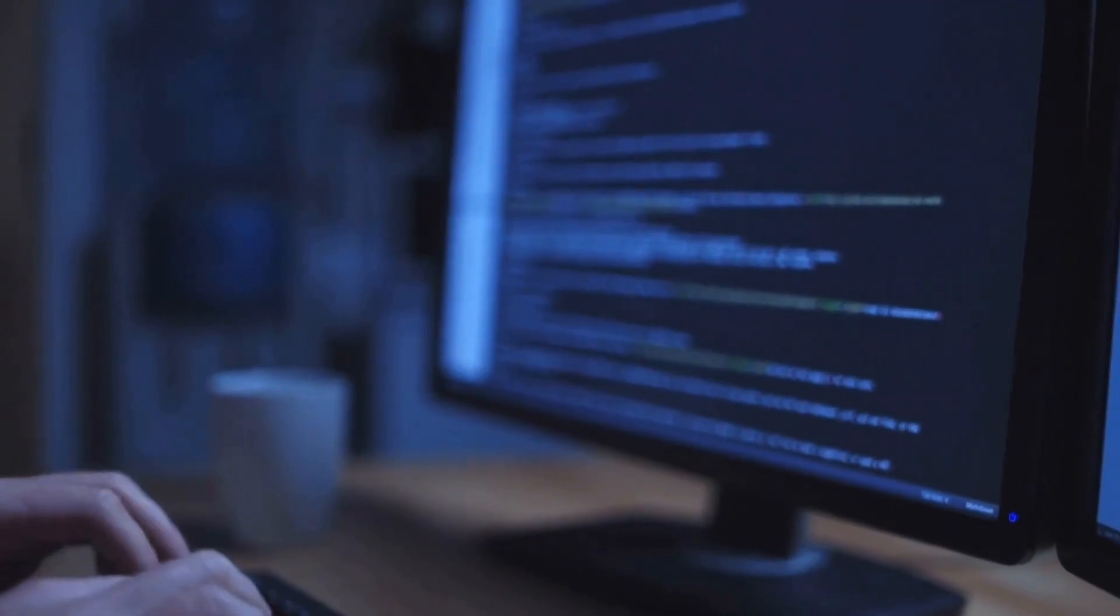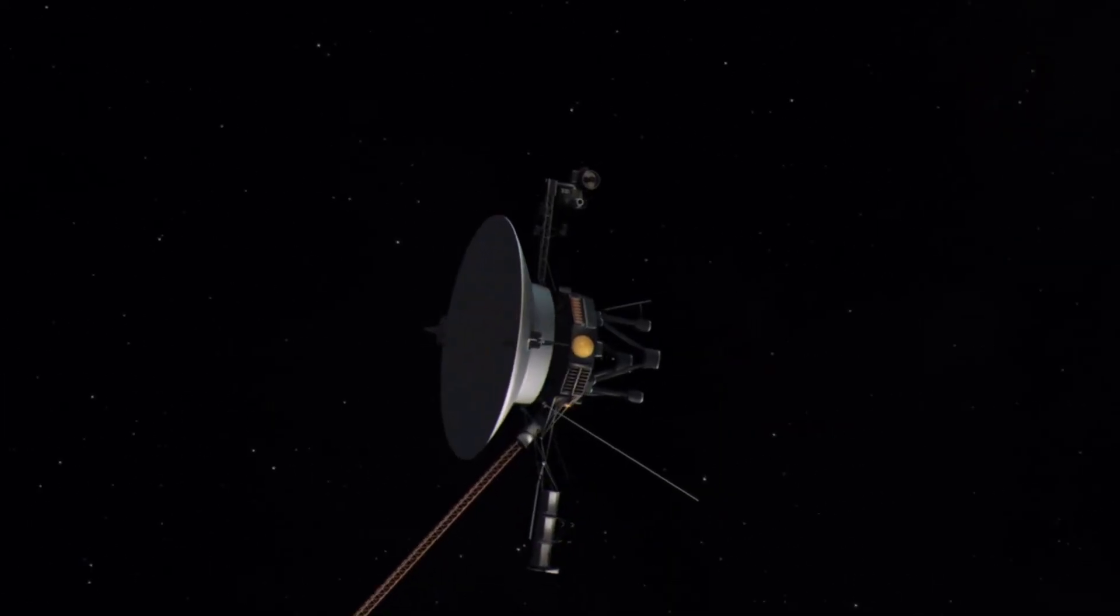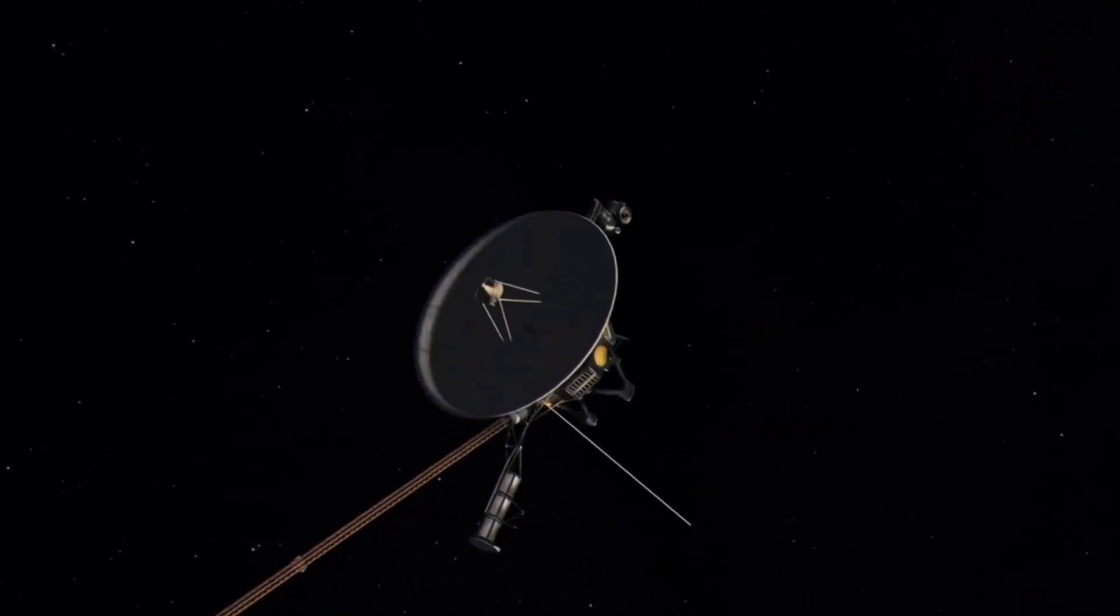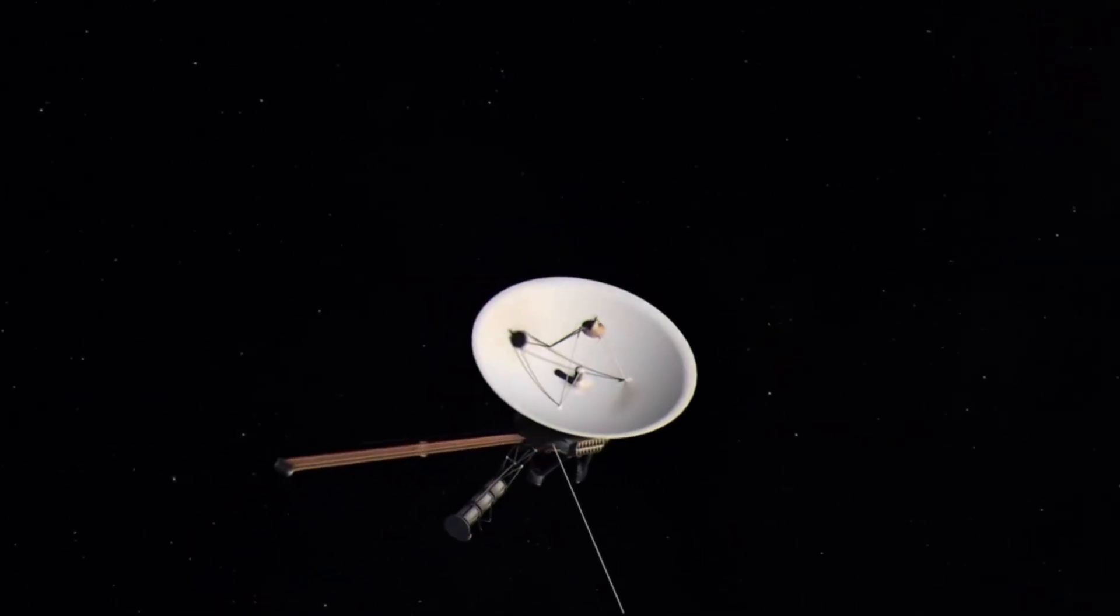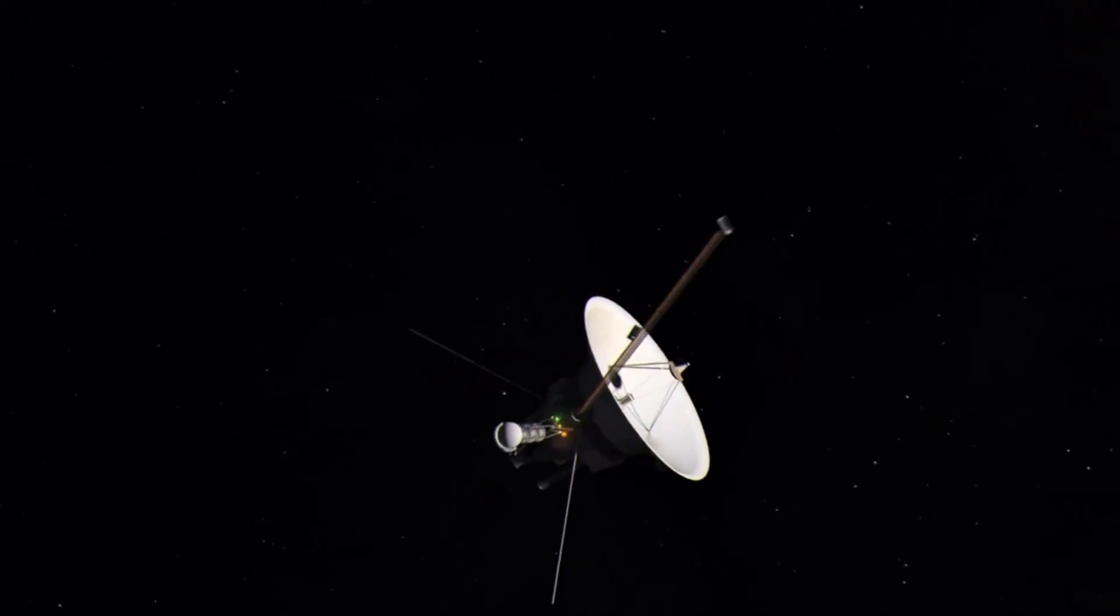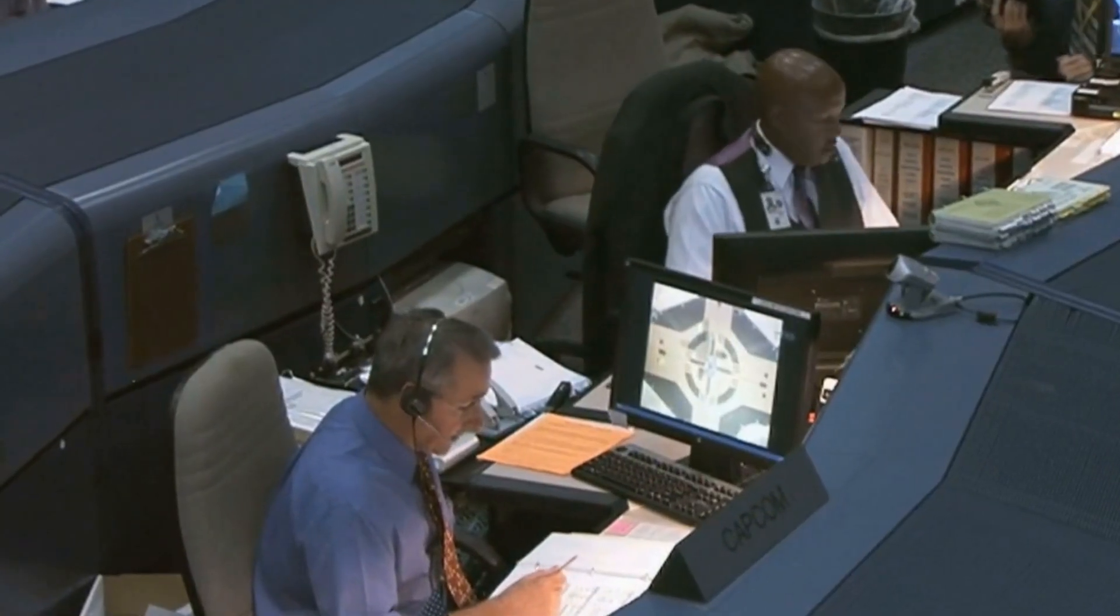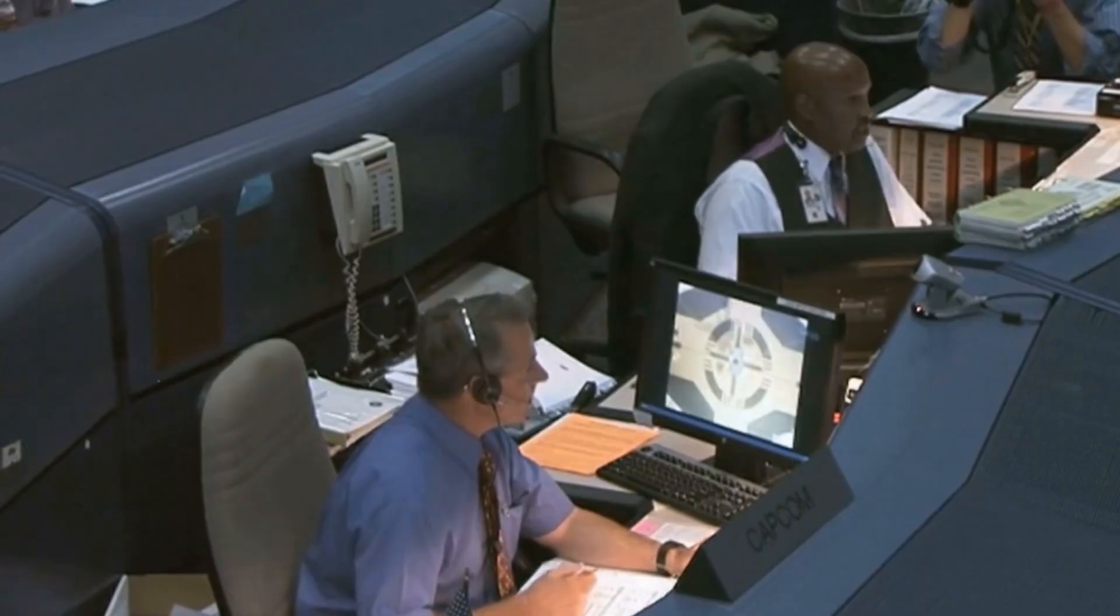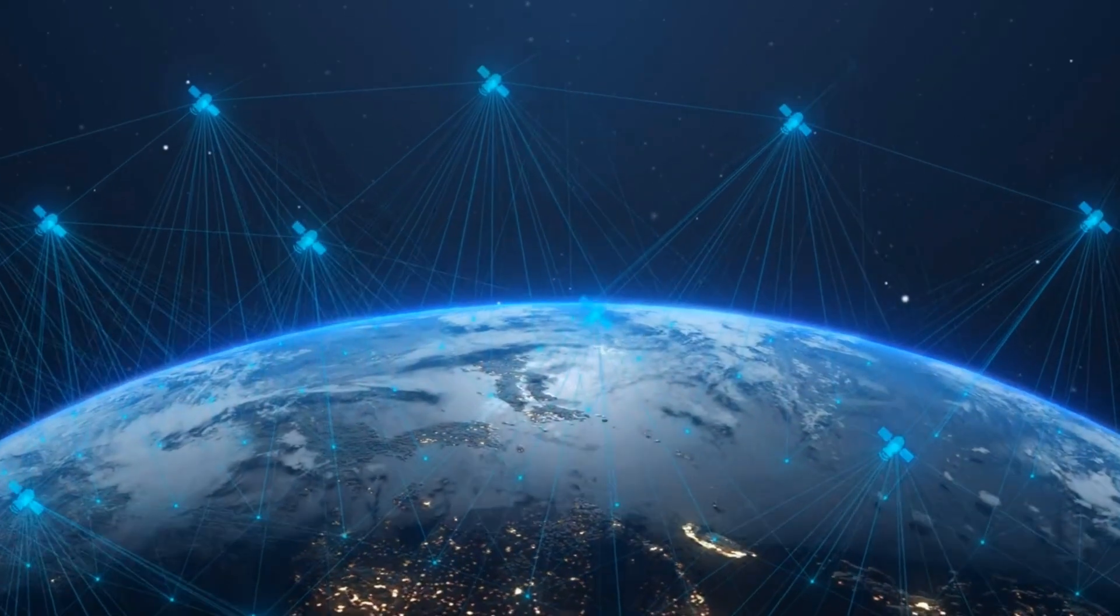Even now, it speaks to us, through a 3.7-meter high-gain antenna linking up with NASA's deep space network. Spanning stations in California, Spain, and Australia, this global system keeps a lifeline open.